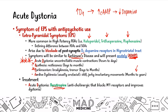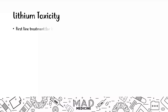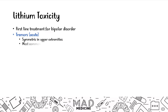The next psychiatric emergency is lithium toxicity. Lithium is a first-line treatment for bipolar disorder, mainly because it prevents and treats the manic symptoms. There are five main side effects that occur with lithium — three are very high yield. The first symptom that occurs very acutely is tremors — symmetric in the upper extremities — and it usually goes away after a while. This is a very common symptom.